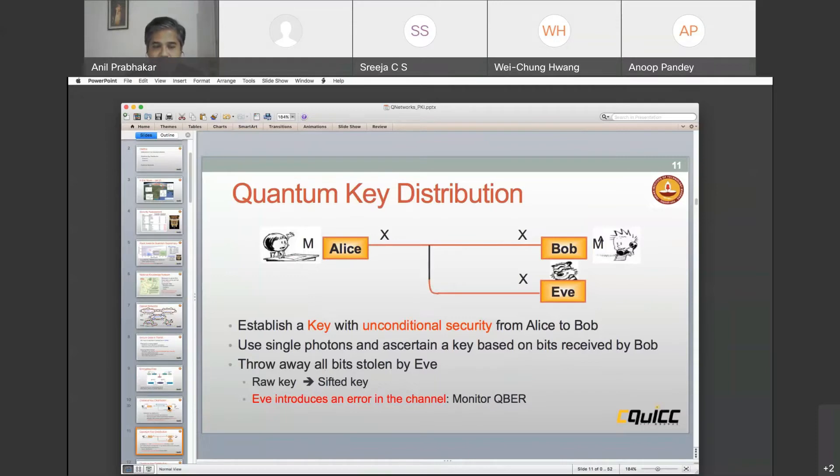How do we do it in quantum key distribution? Before we do that, let's do classical key distribution. In classical key distribution, we use the complexity of a problem like a discrete log and say that if I have some plain text, I will create some ciphertext and send it over to Bob. Bob also, when he wants to send me something, he'll send me a ciphertext and the eavesdropper only has a ciphertext and does not have the plaintext. Unless she has the key, she finds it very hard to get the plaintext. This depends on the complexity of the discrete log problem.